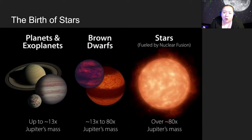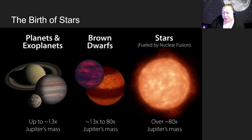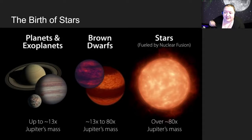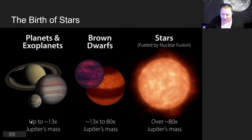If our little dense protostar doesn't quite make it there, fusion can't start and we have a failed star, which we call brown dwarfs. These lie in the range between about 13 Jupiter masses up to about 80 Jupiter masses, and anything smaller than that is planet-sized. So you have to pull in enough material to get hot enough for that fusion to start, and then you have a star.